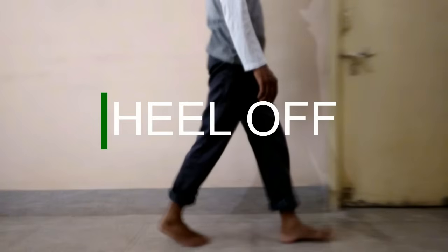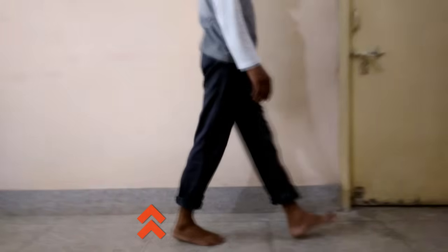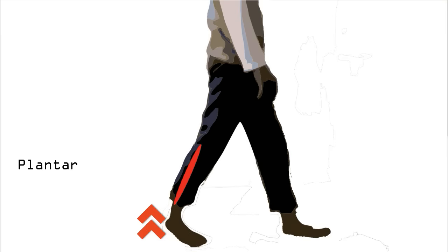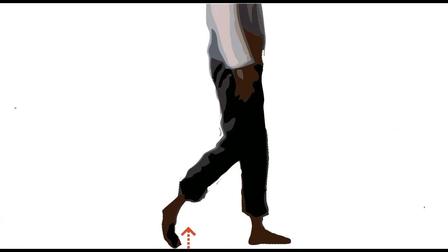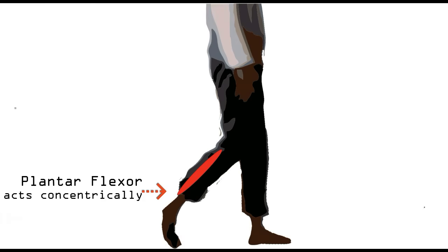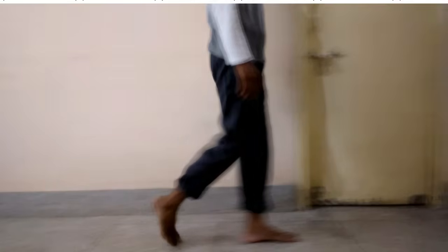Next is heel off. As the name suggests, in this phase the heel leaves the ground. Leaving the ground requires a great deal of force, which is brought about by the plantar flexors. The foot still acts like a rigid base upon which the plantar flexors act concentrically to produce a propulsive push off. Then it is the turn of the toe to leave the ground. Plantar flexors continue to act concentrically. The iliopsoas muscles, which are hip flexors, shift from eccentric to concentric activity, which will advance the extremity into swing phase, completing the stance phase.